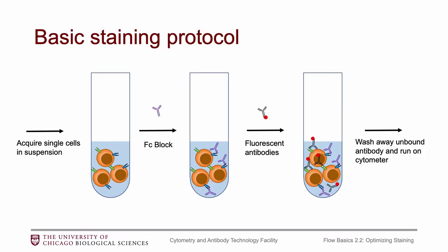Just to remind you what that protocol was: the first step is, if you have tissue, get those cells out of tissue into single cells in suspension. Then you would add your FC block, then your fluorescent antibodies, and once those are incubated and bound to the cells, you would wash away any of the unbound antibody and run it on a cytometer.